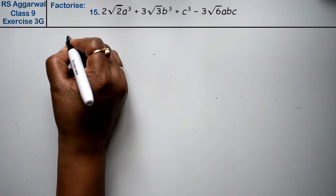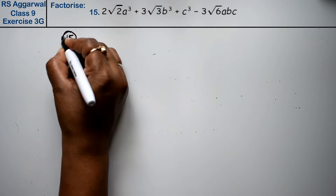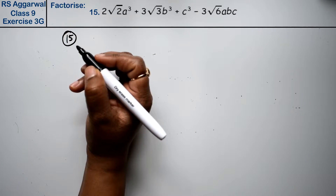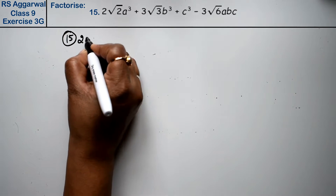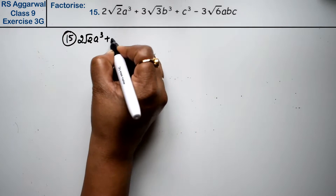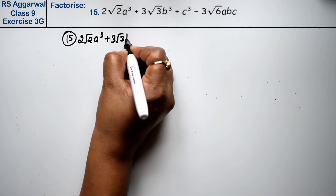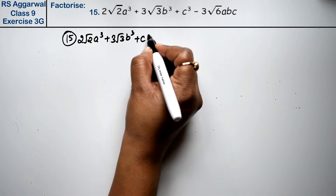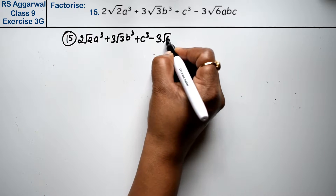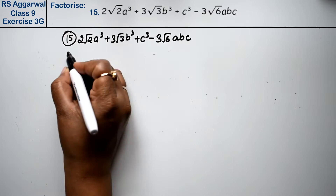Let's do question number 15 of Exercise 3G, that is factorization of polynomials. Question number 15 is: 2√2·a³ + 3√3·b³ + c³ - 3√6·abc.